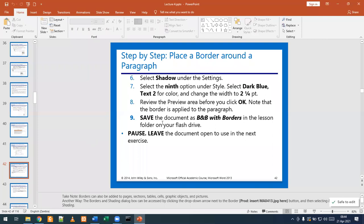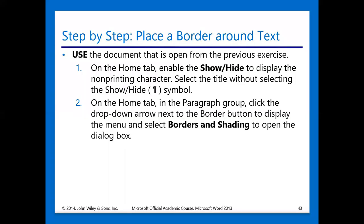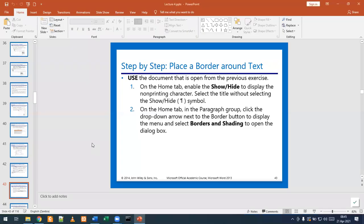We're going to save our file and then leave it open to be used in our next exercise. We then go through the next steps to place a border around your text. We are going to use the document that's open from our previous exercise. In the Home tab, we are going to enable our non-printing characters by clicking the non-printing symbol — that's step number one. For step number two, in the Home tab and in the paragraph group, click the drop-down arrow next to the border button and select Borders and Shading to open the dialog box.